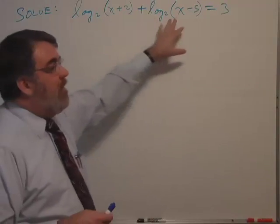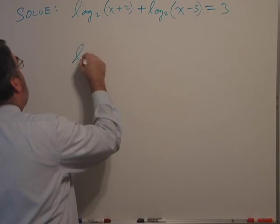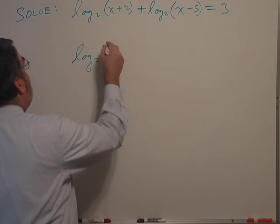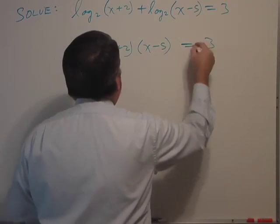So the sum rule of logarithms means that I can combine these together into a product. So I end up with log base 2 of (x+2) times (x-5) equals 3.